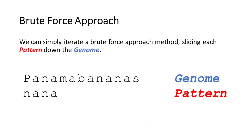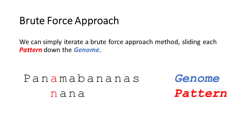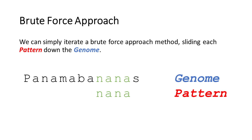One way to solve this is to use a brute force approach by sliding the pattern down the genome. Imagine you had a pattern 'nana' and were looking in the genome string 'panamabananas.' To find exact matches, we simply slide it down. At the first position, 'p' and 'n' don't match, so we slide it down. 'a' and 'n' don't match. At the third position we see a match for 'n,' the second position also matches, but the third doesn't, so we slide down again. No match, no match, no match, until we finally reach another 'n' and find a pattern match there.